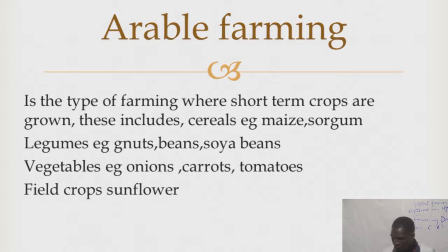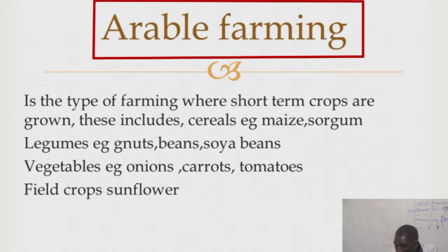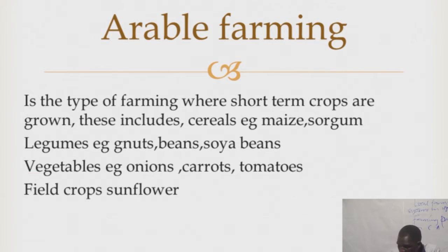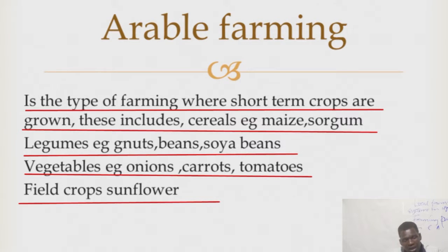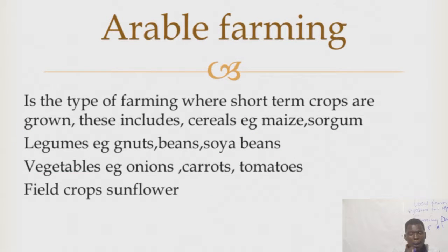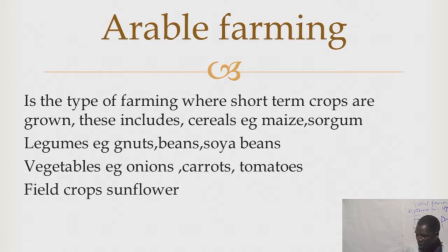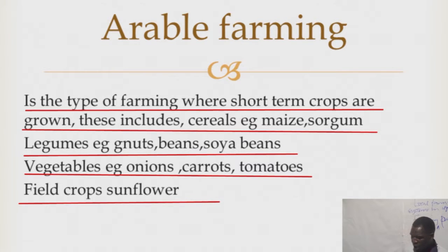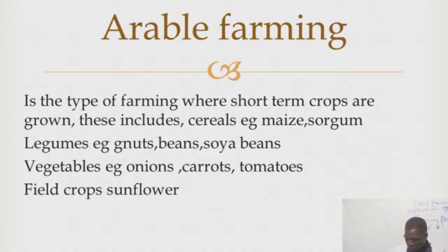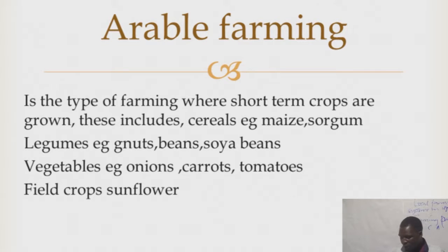Arable farming is a type of farming where short-term crops are grown, mainly for subsistence. In arable farming you may grow cereal crops like maize, sorghum, and rice; leguminous crops like beans and soy beans; vegetables like onions, carrots, and tomatoes; and field crops like tobacco and cotton.